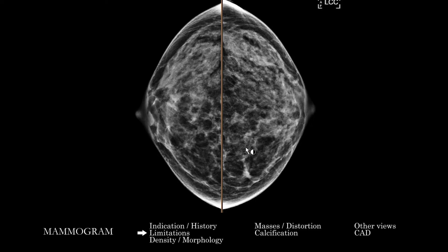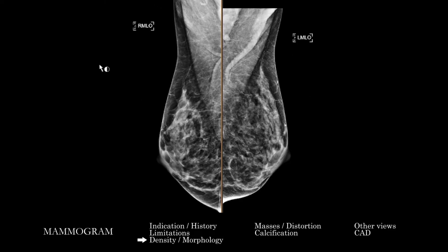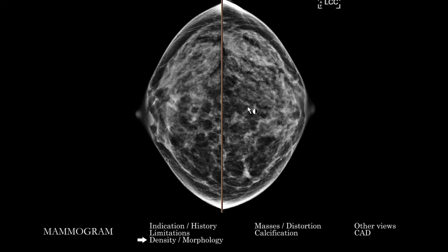If there are significant limitations, you may have to BI-RADS zero a screening and have the patient come back if it can't be corrected right then. Overall, as we go through, you also want to first take a look at the overall breast density, assess it, and compare to prior. You're really going to bucket the patient into categories of entirely fatty, scattered fibroglandular tissue, heterogeneously dense, or extremely dense, and look at both projections to decide on that.